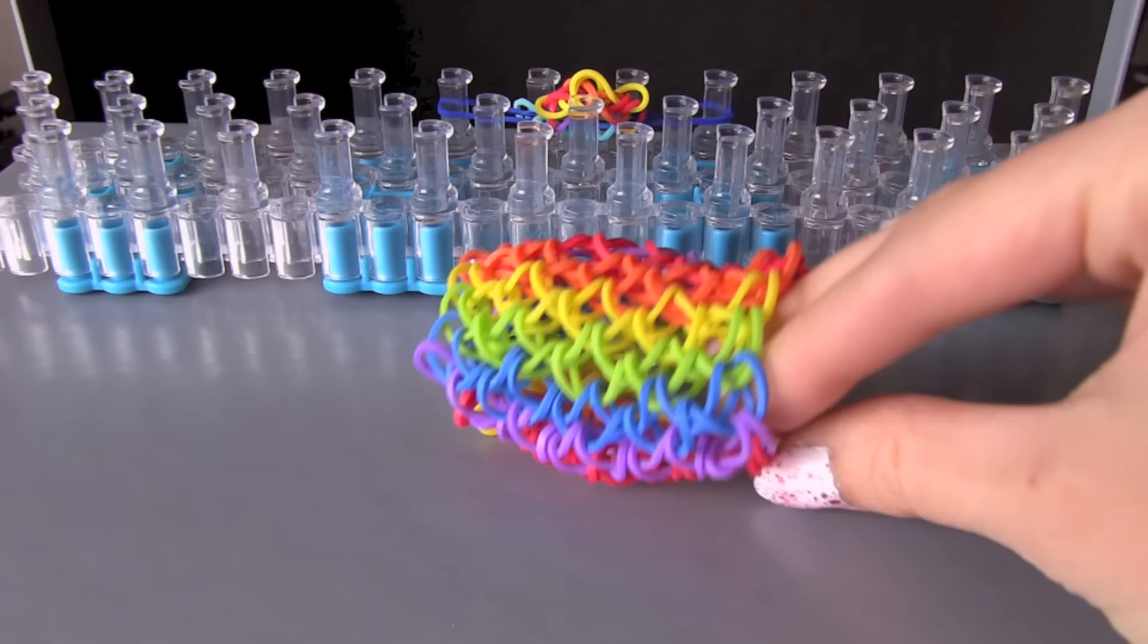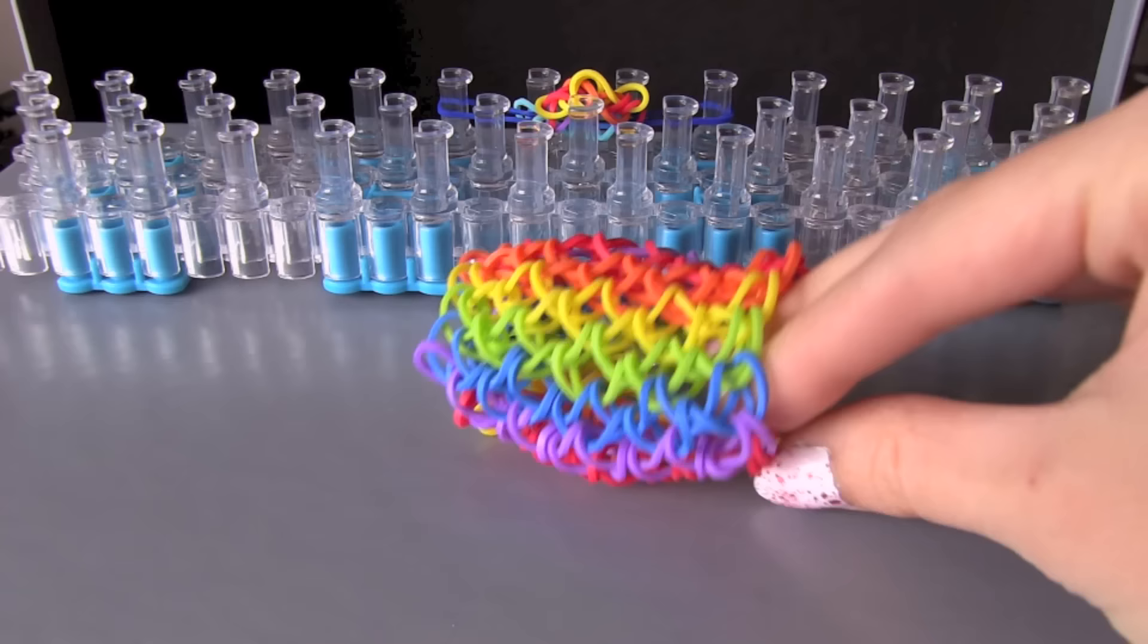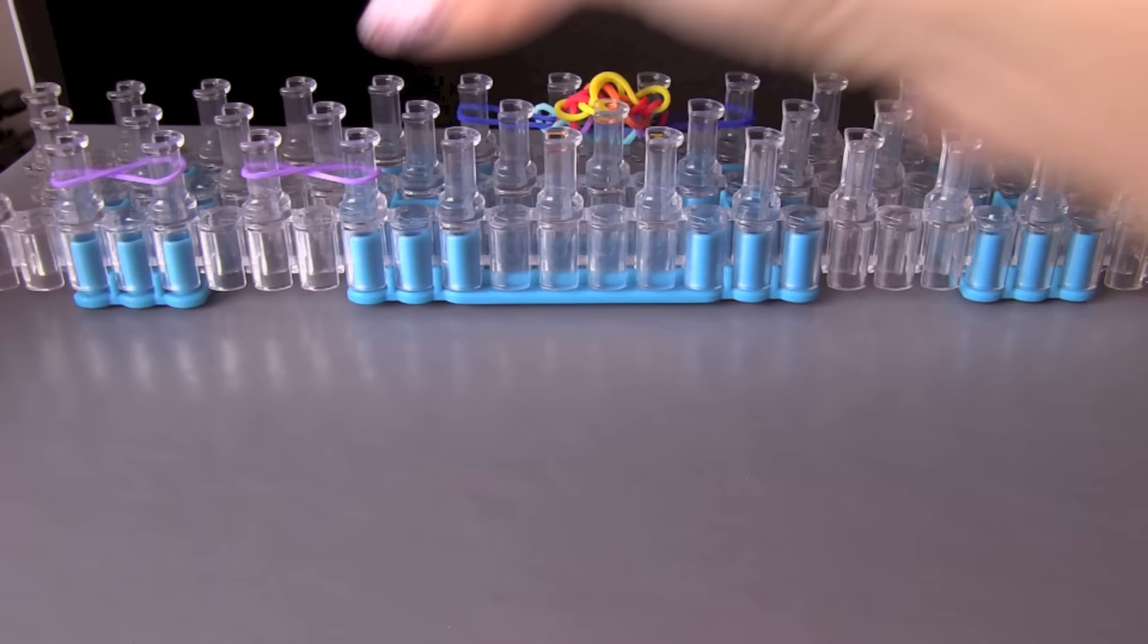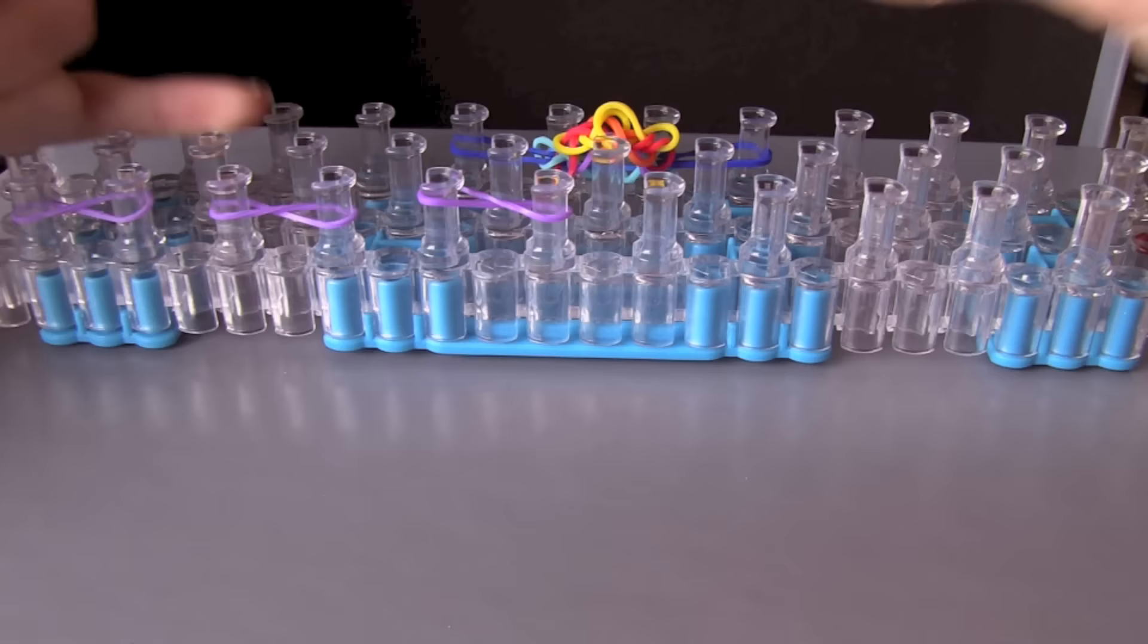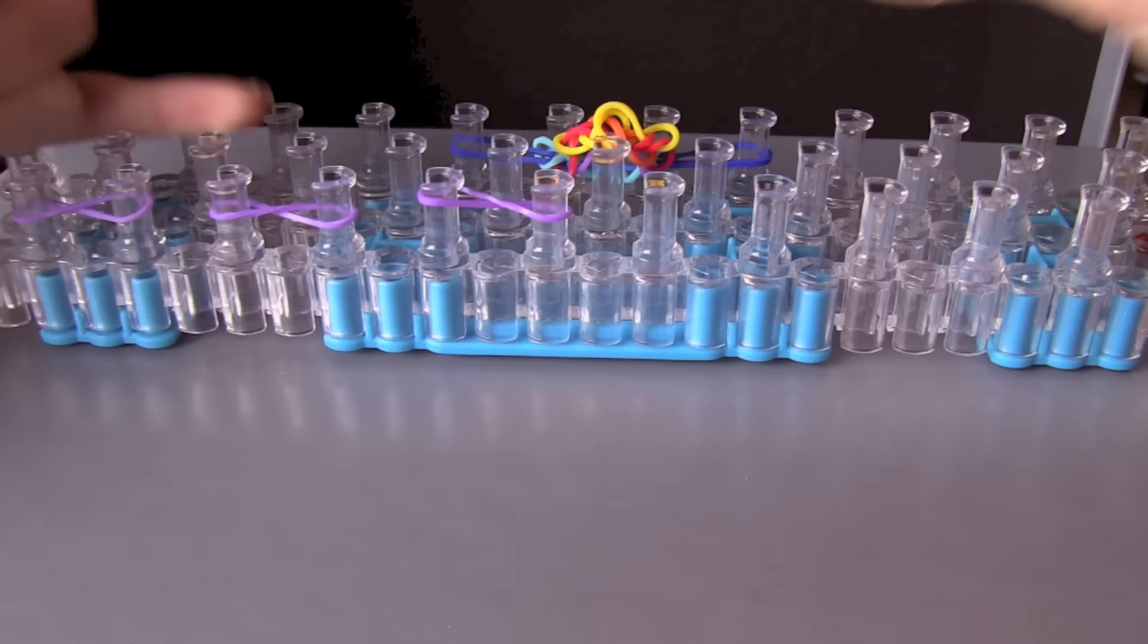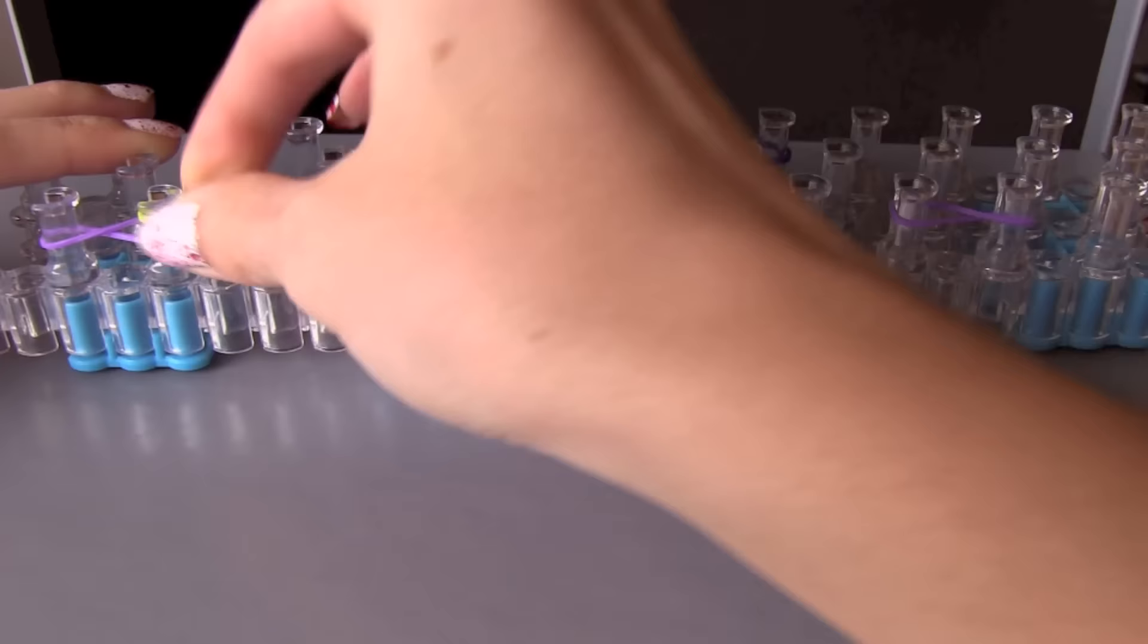So the 10 peg bracelet is the widest of course and you are going to need 5 of the first color of band. So you can see here that I twisted 5 purple bands and I put those on the pegs just like I would have with the 6 pin but I just added some more pins in.